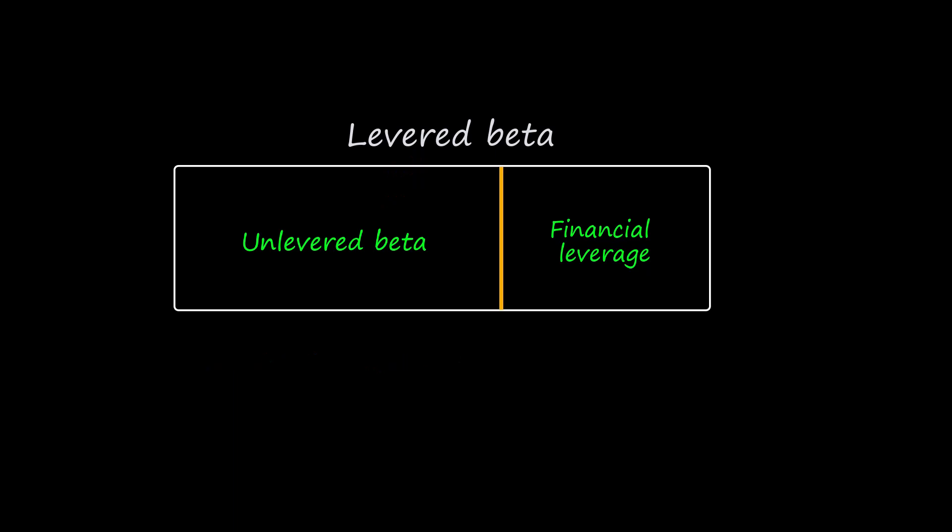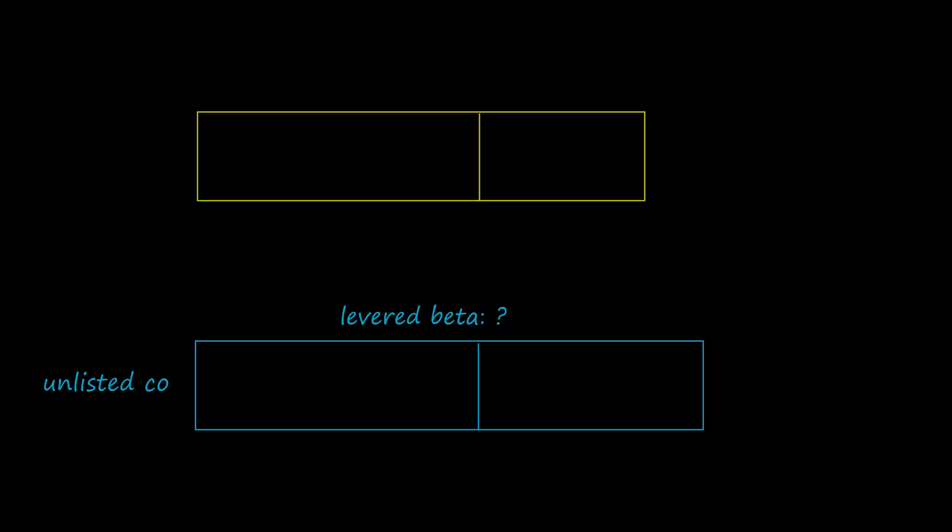Let's see how all of this can be used to estimate the beta for an unlisted company. Such a company has no directly observable beta, but it is very likely to have a peer group of listed companies that do have known betas.